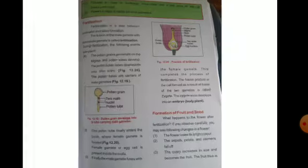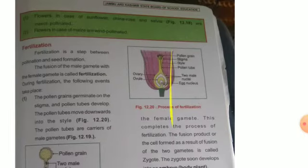The topic today we are taking is fertilization. Here it is written that flowers — in the case of sunflowers, china rose, and salvia — are insect pollinated.